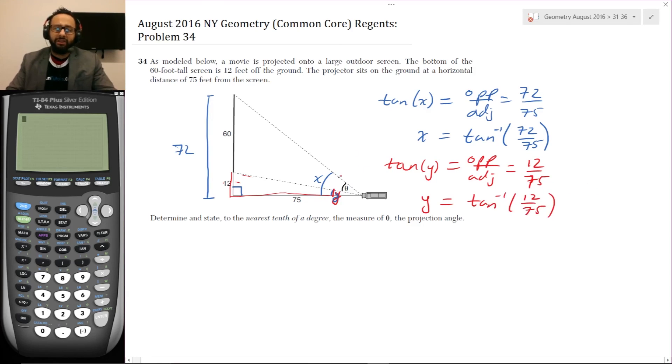So now using the angle addition postulate, I see that angle theta is equal to the full angle X, but minus this extra angle Y. Or in other words, if you wanted to do it by the angle addition postulate, Y plus theta equals X. And then you solve for theta. So we put these in the formula: X is tan inverse 72 over 75 minus Y, which is tan inverse of 12 over 75.